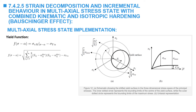In a three-dimensional general loading state, the yield function is defined by the von Mises cylinder whose center is given by alpha. Mathematically, this is represented by the von Mises stress evaluated at sigma minus alpha, rather than at sigma alone. The von Mises stress is then compared with the value of sigma y alpha, or the size of the yield surface. The von Mises stress evaluated at sigma minus alpha can also be written in terms of the deviatoric stress components and the deviatoric components of the back stress tensor.